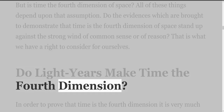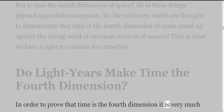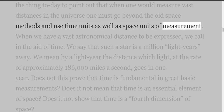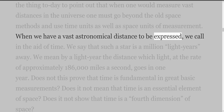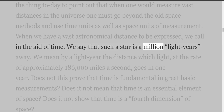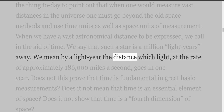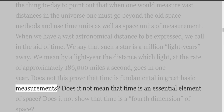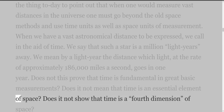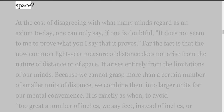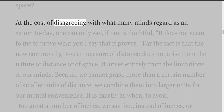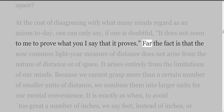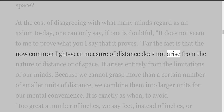Do light years make time the fourth dimension? In order to prove that time is the fourth dimension, it is very much the thing today to point out that when one would measure vast distances in the universe, one must go beyond the old space methods and use time units as well as space units of measurement. When we have a vast astronomical distance to be expressed, we call in the aid of time. We say that such a star is a million light years away — the distance which light, at the rate of approximately 186,000 miles a second, goes in one year.